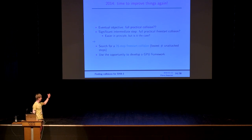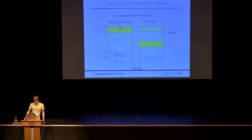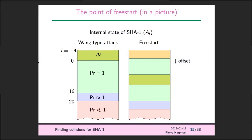The first step was to search for a 76-step free-start collision — the largest number of steps not previously attacked. This also gave us the opportunity to develop the GPU framework used in all subsequent attacks. In a free-start attack, rather than initializing at the start, you initialize in the middle and slide everything back, delaying the start of the probabilistic phase.